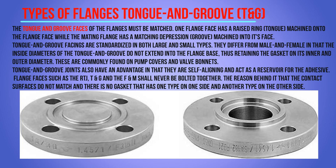The tongue and groove faces of flanges must be matched. One flange face has a raised ring called the tongue machined onto the flange face, while the mating flange has a machined depression called the groove. Tongue and groove facings are standardized in both large and small types. They differ from male and female in that the inside diameter of the tongues and grooves does not extend into the flange base, thus retaining the gasket on both its inner and outer diameter. They are commonly found on pump covers and valve bonnets.